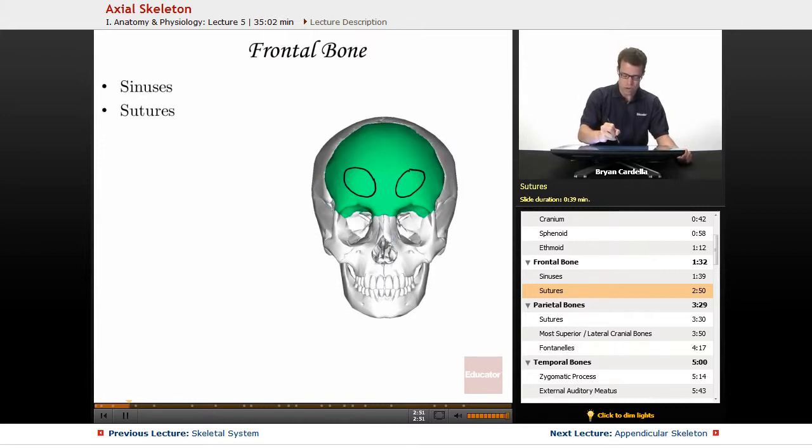Sutures. Sutures are those immovable joints that connect a bone to another bone. So you do have sutures that connect the frontal bone to the parietal bones on the sides. You have sutures right here. That connect the frontal bone to the maxillae, the nasal bones, which we'll get to later. And so part of the frontal bone does form part of the orbit of the eye. The orbit of the eye would be the giant eye holes that you see in the skull. That's the frontal bone.